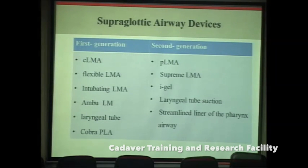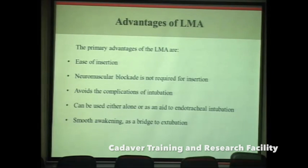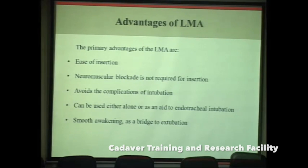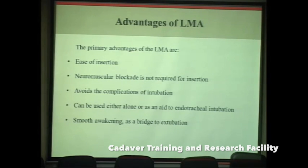Second generation devices all incorporate a gastric drain tube — these are the ProSeal LMA, Supreme LMA, i-gel, laryngeal tube suction, and streamlined liner of the pharynx airway. The primary advantage of supraglottic airway devices is ease of insertion. Tracheal intubation requires skill, and even with video laryngoscopy some skill is still needed, whereas even a novice physician can insert a supraglottic airway.